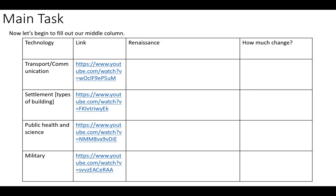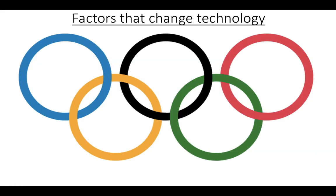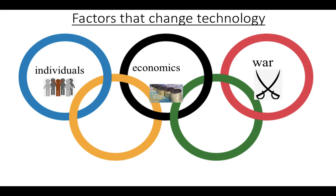Pause the video here and finish the section on the Renaissance — tell me what technology was around in the Renaissance and then how much has changed. Then consider our final two tasks: how did individuals change technology? Individuals like Elizabeth I or William Shakespeare — how did they change technology? How did economics, the striving for money, change technology? And how did war change technology? Focus on your factors, and if you can think of any other factors, please add them. Finish that task — you have five minutes, and then we'll move on to our final task.